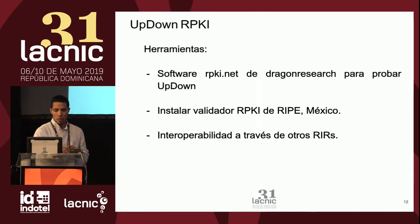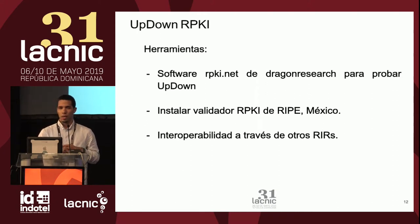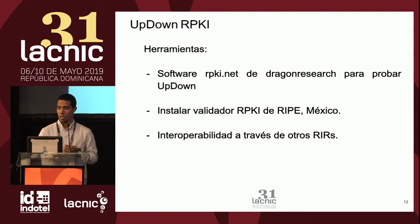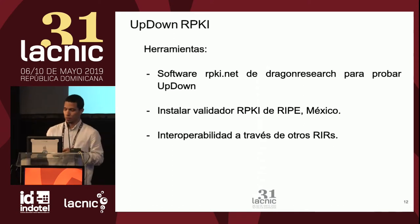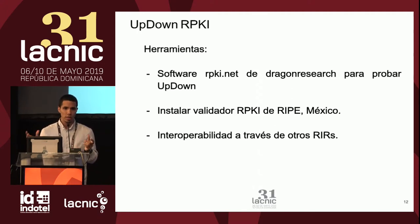Algunas herramientas para probar UpDown. Tenemos el software RPKI.net de Dragon Research, que trae una implementación de UpDown — acá podemos configurar la parte cliente y probar el server y viceversa. Además, podemos instalar los validadores de RPKI de RIPE y de LACNIC, que está ahora en versión beta, y de esta forma validar en el repositorio los objetos que se están generando. Finalmente, tenemos la interoperabilidad de los RIRs: dos RIRs se ponen de acuerdo, uno se configura como parte UP, el otro como server, y se prueba el servicio.